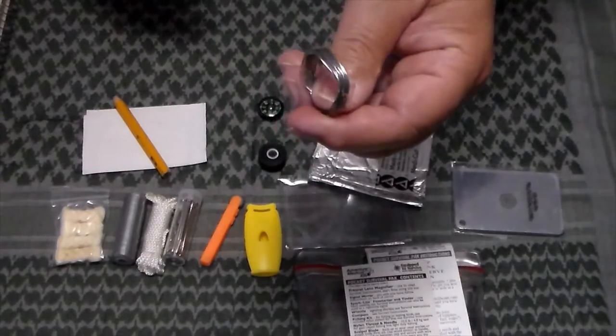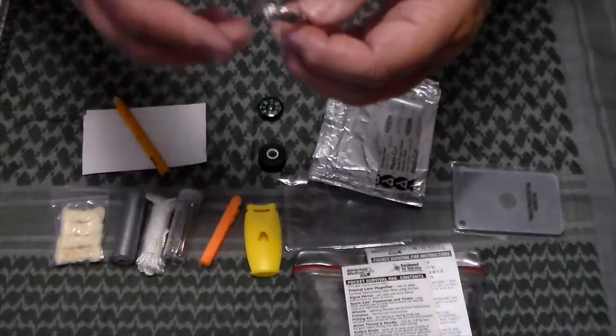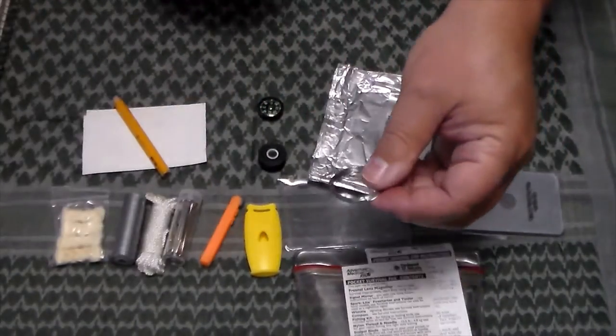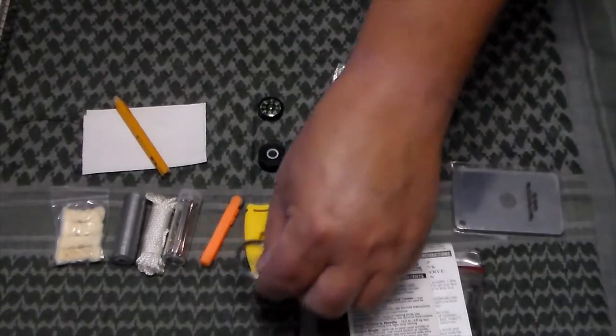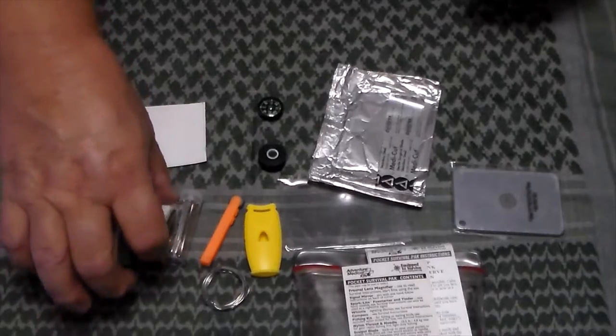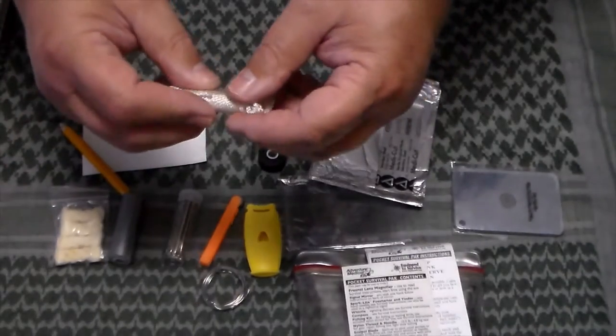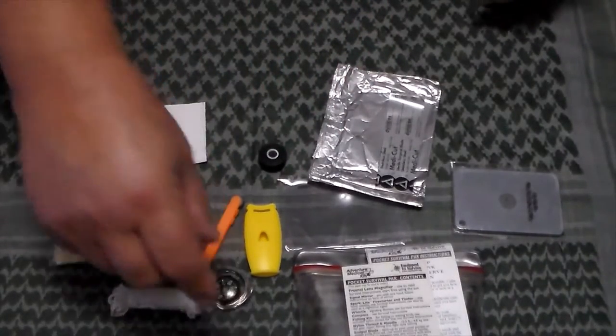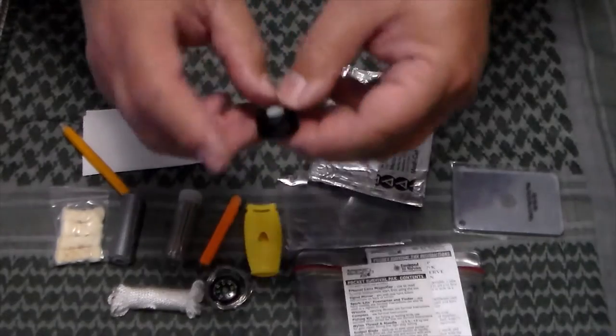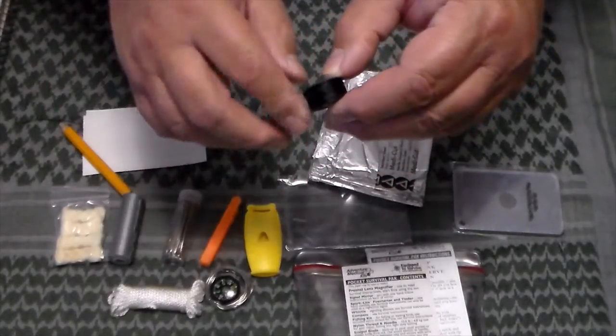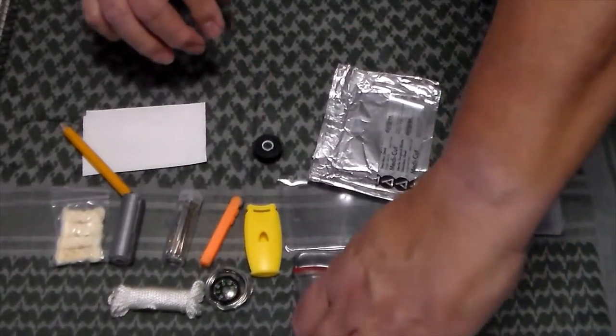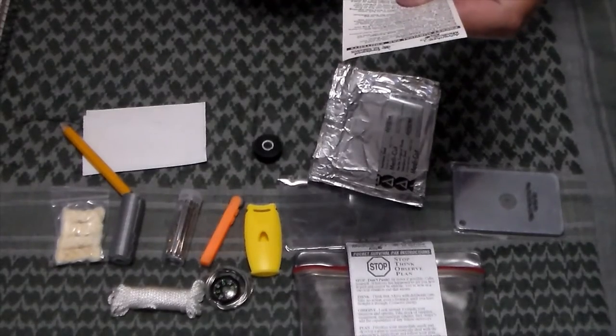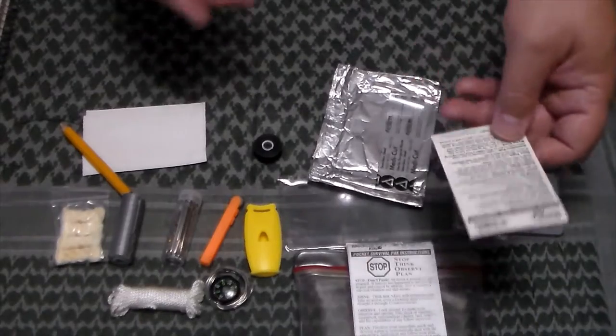Then it's got a little bit of wire. They call it snare wire. It's a stainless steel wire. Use it for a lot of things, cordage or making a snare. And then you have your cordage. It's about 20 feet of nylon cord. Put that back down there. And then a bobbin of thread. I believe this is, let me look on here. It's nylon thread. Yeah, it's 10.5 pound test, so you can use it as thread or fishing line.